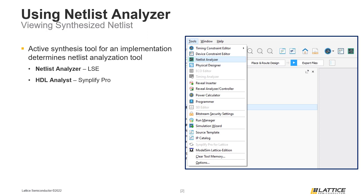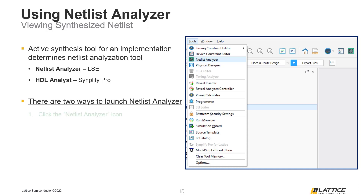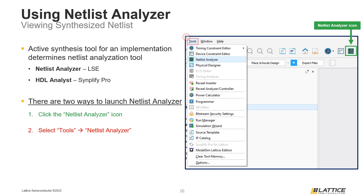Once a project has completed synthesis, Radiant's Netlist Analyzer can be used to view the synthesized netlist in terms of RTL and technology components. There are two ways to launch Netlist Analyzer: the first is to select its icon from Radiant's toolbar, as shown in the figure on the slide. The second way is to select Tools from Radiant's menu bar, then Netlist Analyzer from the drop-down list.